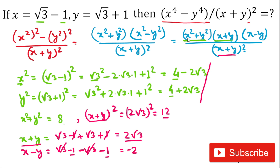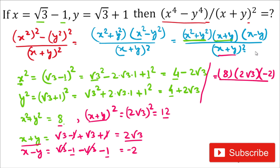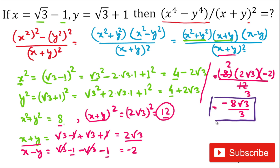Finally, we substitute all values. The expression becomes: (x²+y²) × (x+y) × (x−y) divided by (x+y)². Substituting: 8 × 2√3 × (−2) divided by 12. In the numerator: 8 × 2 × (−2) × √3 = −32√3. Dividing by 12 gives −8√3/3. So the answer is −8√3 divided by 3.